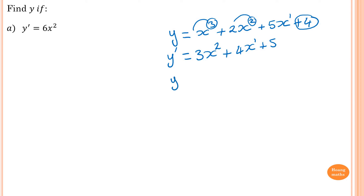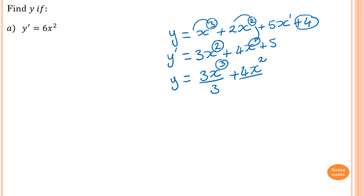Now let's go back and find the primitive function. So y equals — from power 2 we add 1 to get 3, then divide by that power, which is 3. Then add 1 to power 1 to get 2, divide by 2. For the 5 term, x to the power 0 becomes 5x to the power 1, divided by 1. And since we can't recover the constant 4, we add a constant C.